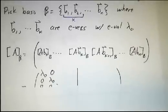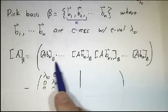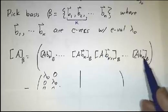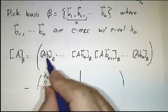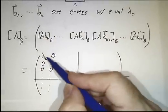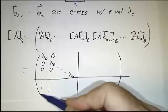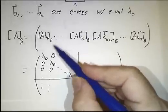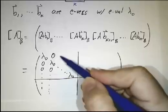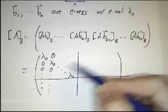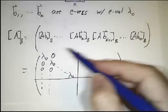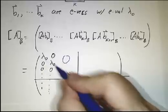The first k vectors are eigenvectors with eigenvalue λ₀; the remaining vectors may or may not be eigenvectors — they're just vectors. To figure out the matrix, we take Ab₁ and express it in the b basis, Ab₂, and so on through Abₖ. But Ab₁ = λ₀b₁, so its coordinates in the b basis are (λ₀, 0, 0, …). Similarly Ab₂ = λ₀b₂, Ab₃ = λ₀b₃, through Abₖ = λ₀bₖ. So in the upper left-hand corner of the matrix we get λ₀ times the identity, and in the lower left-hand corner we get 0.